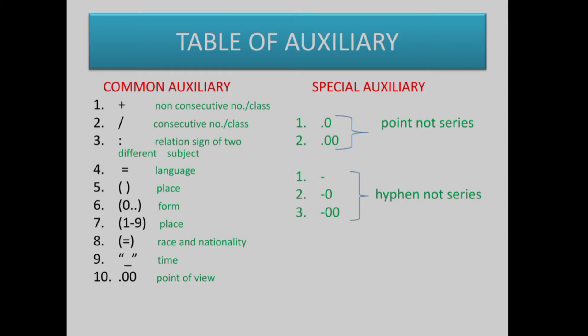What is the name of common auxiliaries? What does the class mean? Plus or non-consecutive slash, or consecutive. That indicates a relation between two different numbers. Like language equal — all these are special auxiliaries. We will talk about the class. When we publish one class, you will use a video. You will find the subtotal class. This is the special auxiliaries, point 0 series and iPhone series.